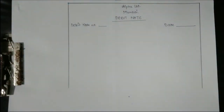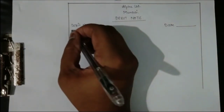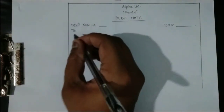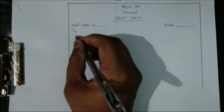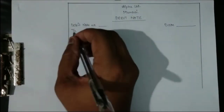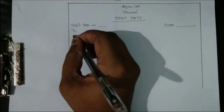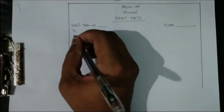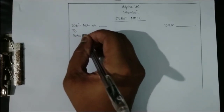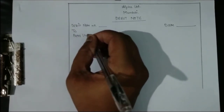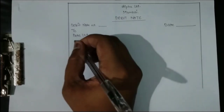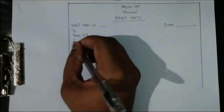After the number and date, we write 'To' and then the receiver's name and address. I will assume the receiver's name to be Beta Limited, located in Sangli.